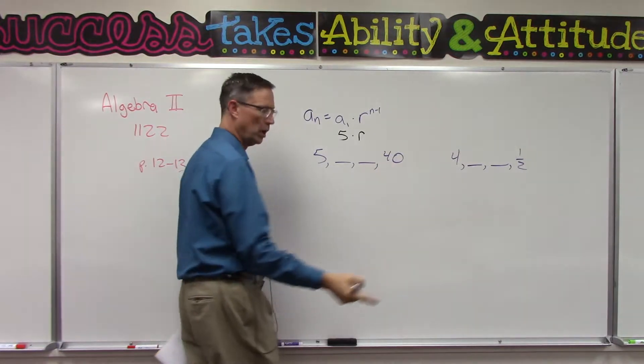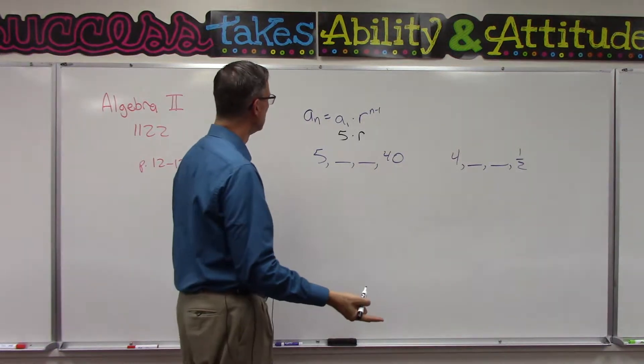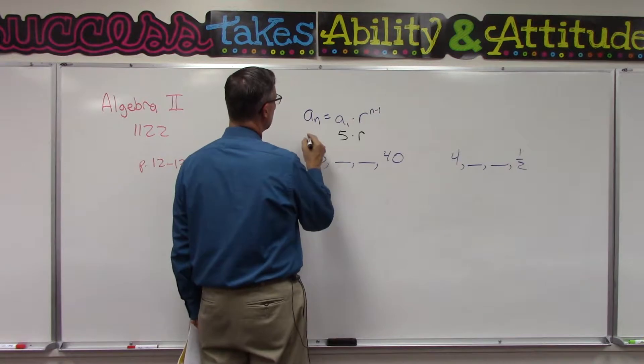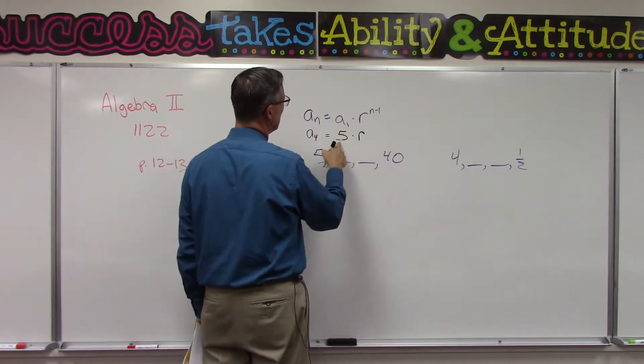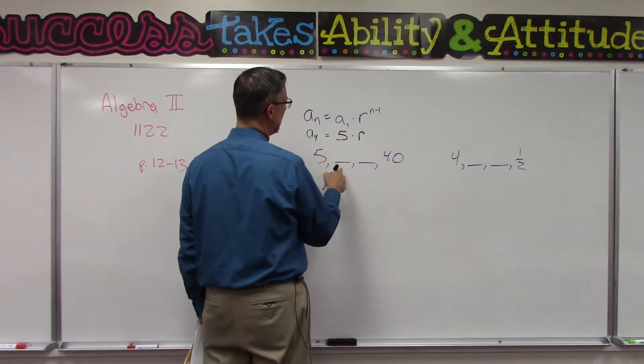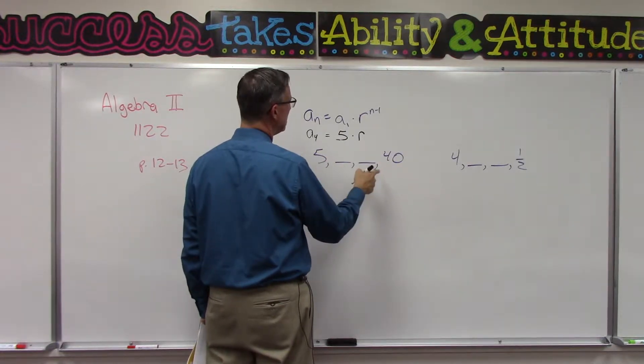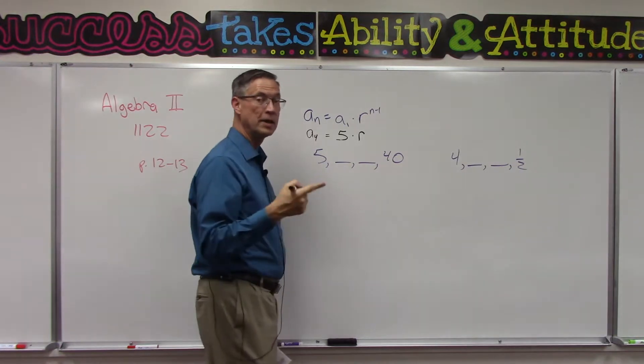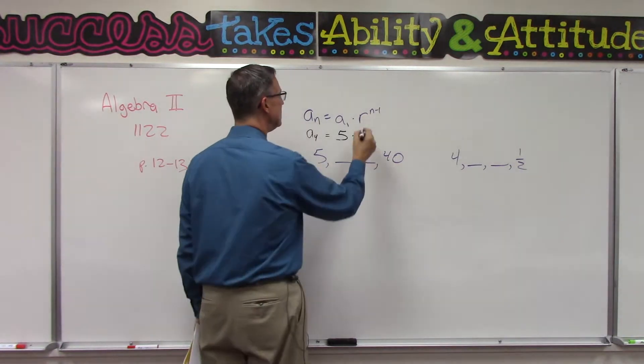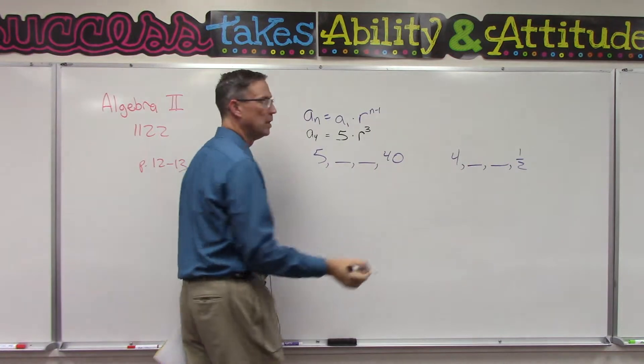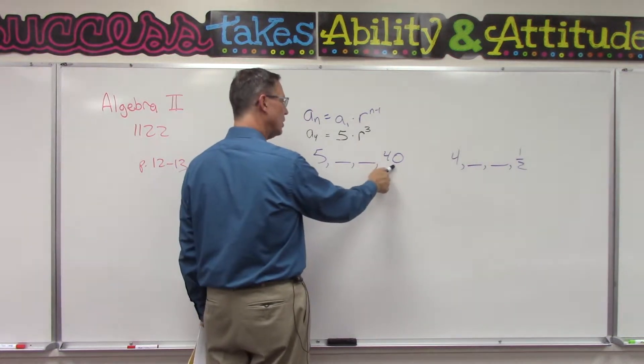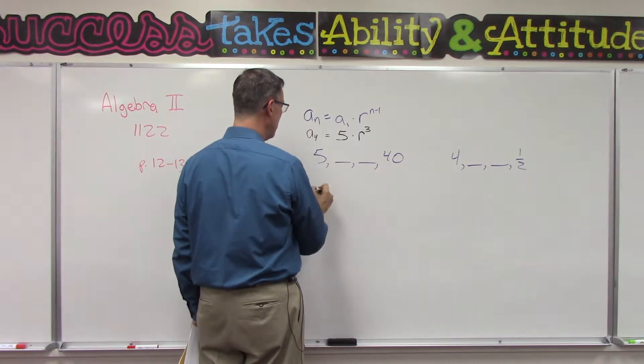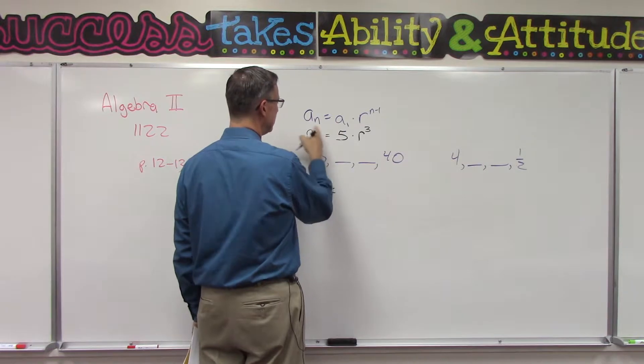So we could say a subscript 4 equals the first term, 5, times r raised to the 4 minus 1 power, which means this is to the third power. Now that last term, that fourth term, actually is 40, so I can plug in the 40 in place of this fourth term: 40 equals 5 times r to the third.